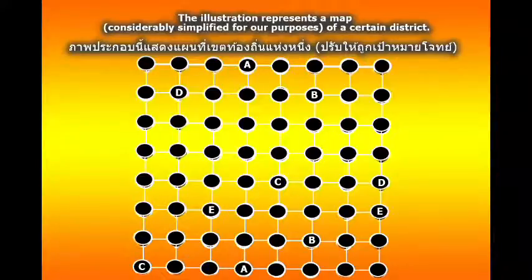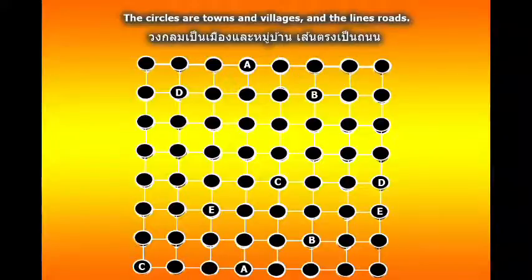The illustration represents a map, considerably simplified for our purposes, of a certain district. The circles are towns and villages, and the lines roads.